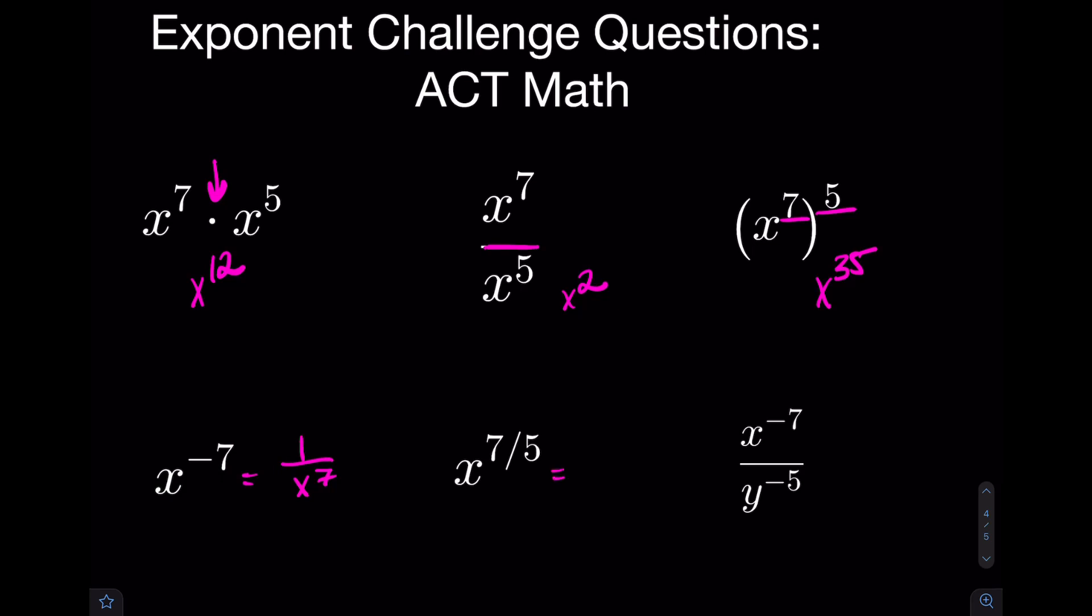Help me out over here. This is going to be 5th root of x to the 7th. Again, this is the power that stays while the denominator is the power that becomes the root. Please don't screw that up. Let's test it all the time.